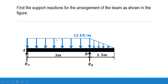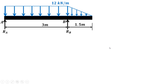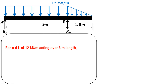First, we'll convert this uniformly distributed load — which is a rectangular distribution — into a point load, and then the UVL acting over 1.5 meters into a point load, which is a triangular distribution. So first we consider the UDL of 12 kilonewton per meter acting over 3 meters.